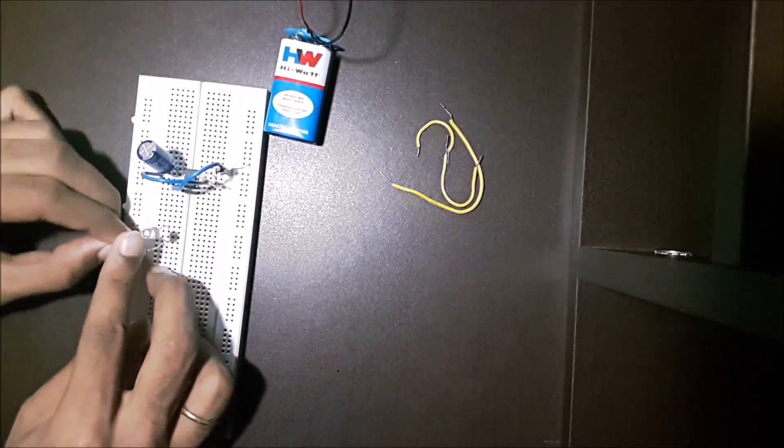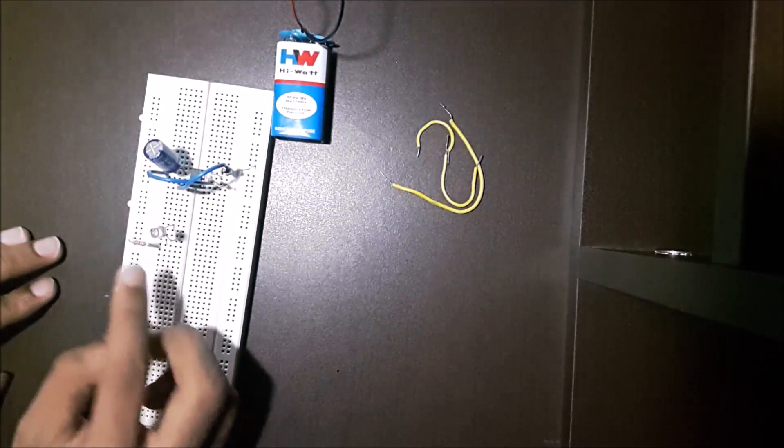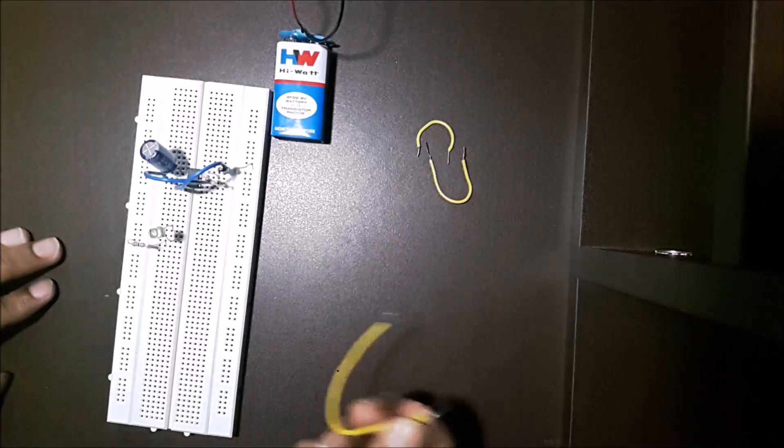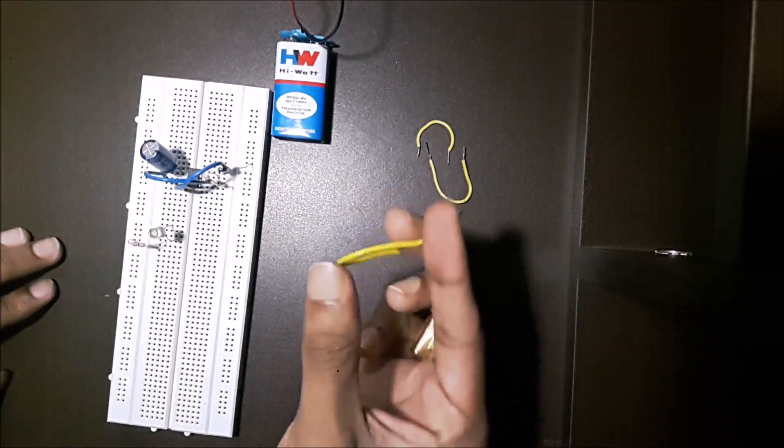This resistor is placed to stop the LED from burning when current flows through it. Then connect pin 3 on the timer IC to the LED.